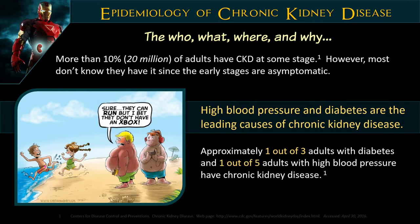About 20 million Americans are diagnosed with chronic kidney disease at some stage. Because 75 to 90 percent of kidney function must be lost before symptoms appear, many patients are already in a more deadly, life-threatening stage before it's detected. High blood pressure and diabetes are the leading causes of chronic kidney disease. One out of every three diabetics will get kidney failure, and one out of every five adults with high blood pressure will develop kidney failure.